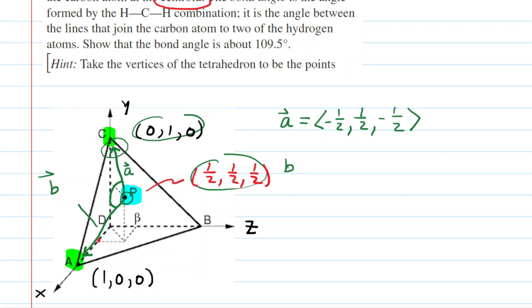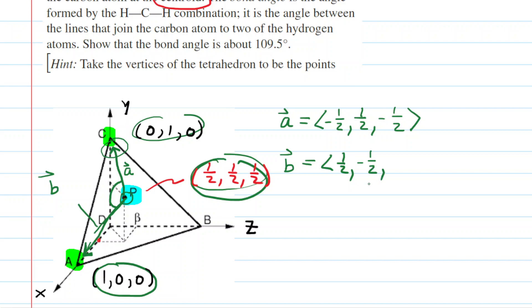Similarly, we can come up with a representation of vector B. Vector B is drawn from point P to point A, so we take the termination minus the origin. We have 1 minus 1/2, which is 1/2; then 0 minus 1/2, which is negative 1/2; and then 0 minus 1/2, which is also negative 1/2. So vector B = (1/2, −1/2, −1/2).